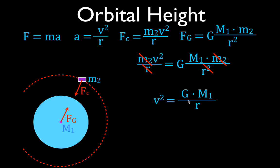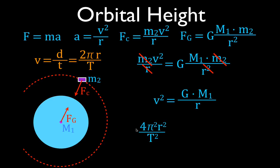We could solve for R directly, except we don't know the velocity. The velocity equals distance divided by time. We know the time — it's the period, 114.8 minutes — but we don't know the distance because we don't know the height. Since we're taking it to be a circular path, the circumference is 2πR, so the velocity is 2πR/T. We substitute that in for V and square everything, giving us 4π²R² / T² = G·M1 / R.